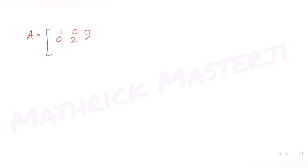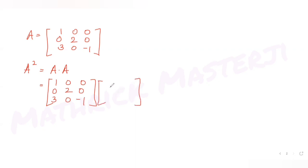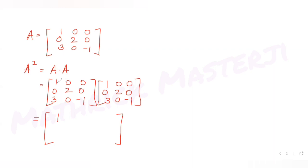I have matrix A which is 1 0 0 / 0 2 0 / 3 0 -1. To figure out A squared, I'll just multiply matrix A with itself: 1 0 0 / 0 2 0 / 3 0 -1 multiplied by 1 0 0 / 0 2 0 / 3 0 -1. Let me work out each element: 1 into 1 plus 0 plus 0 gives 1, and the remaining first-row elements give 0.